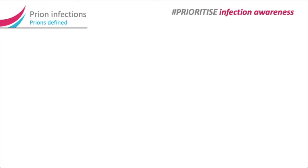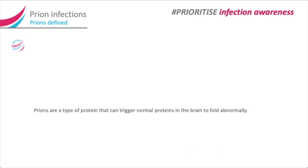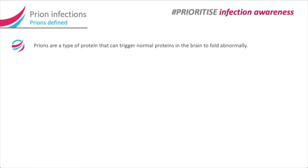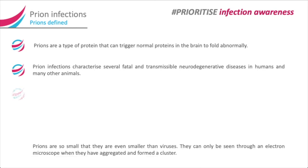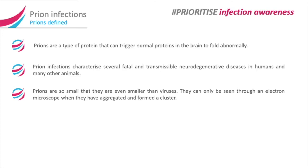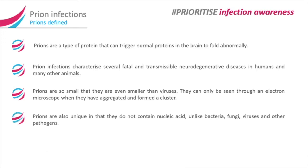Prion infections — prions defined. Prions are a type of protein that can trigger normal proteins in the brain to fold abnormally. Prion infections characterise several fatal and transmissible neurodegenerative diseases in humans and many other animals. Prions are so small that they are even smaller than viruses, and can only be seen through an electron microscope when they have aggregated and formed a cluster. Prions are also unique in that they do not contain nucleic acid, unlike bacteria, fungi, viruses, and other pathogens.